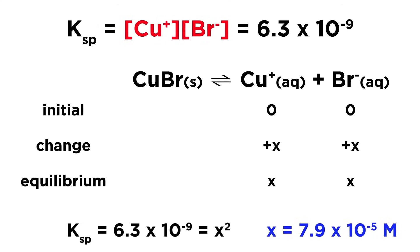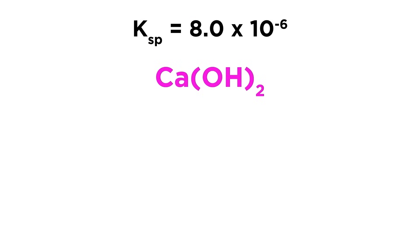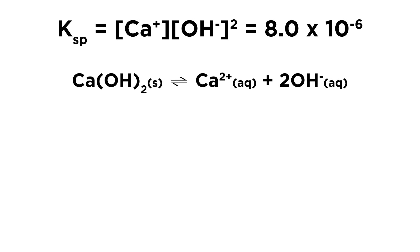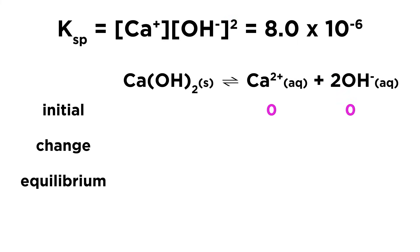This can be a little trickier if the Ksp equation involves exponents, but the process is essentially the same. Let's look at calcium hydroxide, which has a Ksp of 8 times 10 to the negative 6. Say we place this in aqueous solution, which will produce some calcium ions and hydroxide ions. Again, let's write the Ksp expression, noticing that the hydroxide concentration must be squared, as there will be two hydroxide ions for every formula unit of calcium hydroxide that dissolves. Then when we make the ICE chart, we will notice that the initial concentration of each ion will be zero, but the change will be x and 2x respectively, due to the stoichiometry of the equation, and the equilibrium concentrations will also be x and 2x.